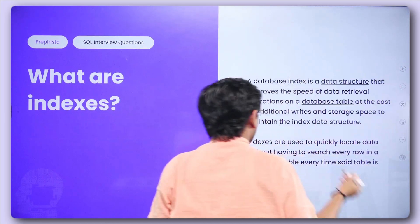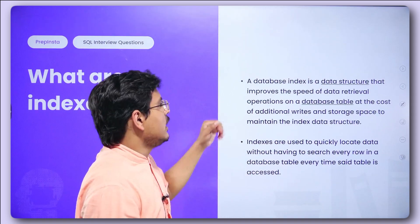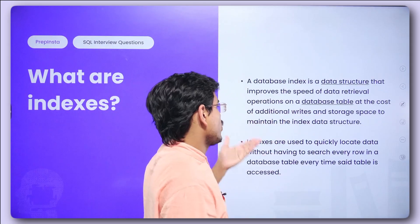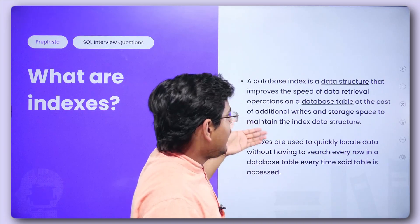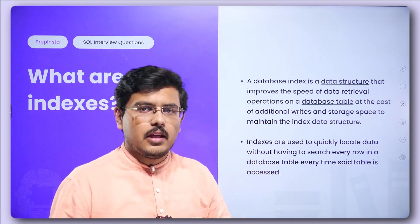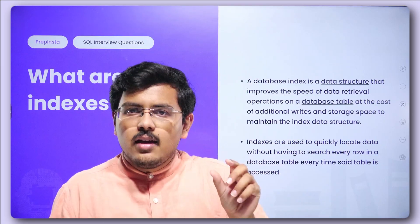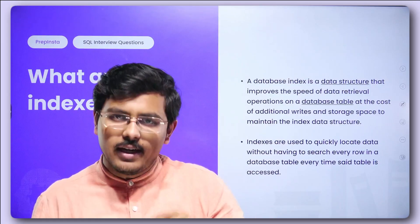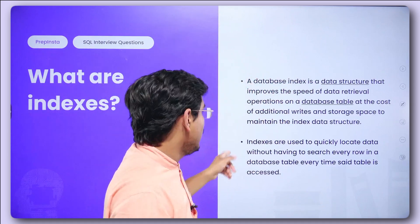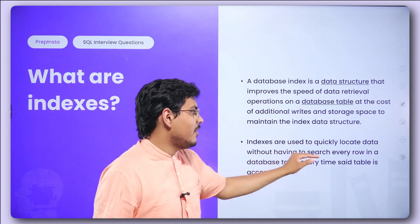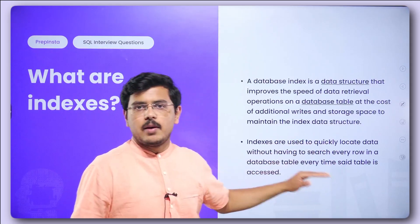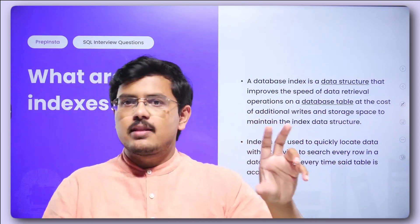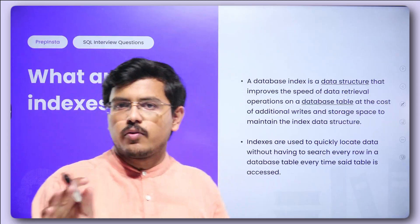What are indexes? A database index is a data structure that improves the speed of data retrieval operations on a database table at the cost of additional writes and storage space to maintain the index data structure. It's just like indexing a book — you can straight away find what you need from the index rather than searching through the entire book row by row.